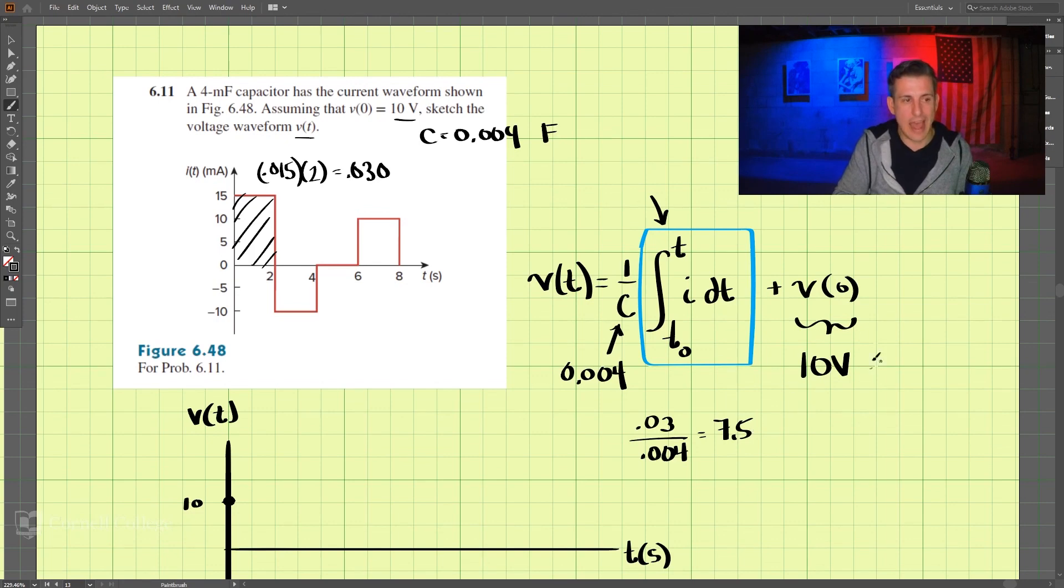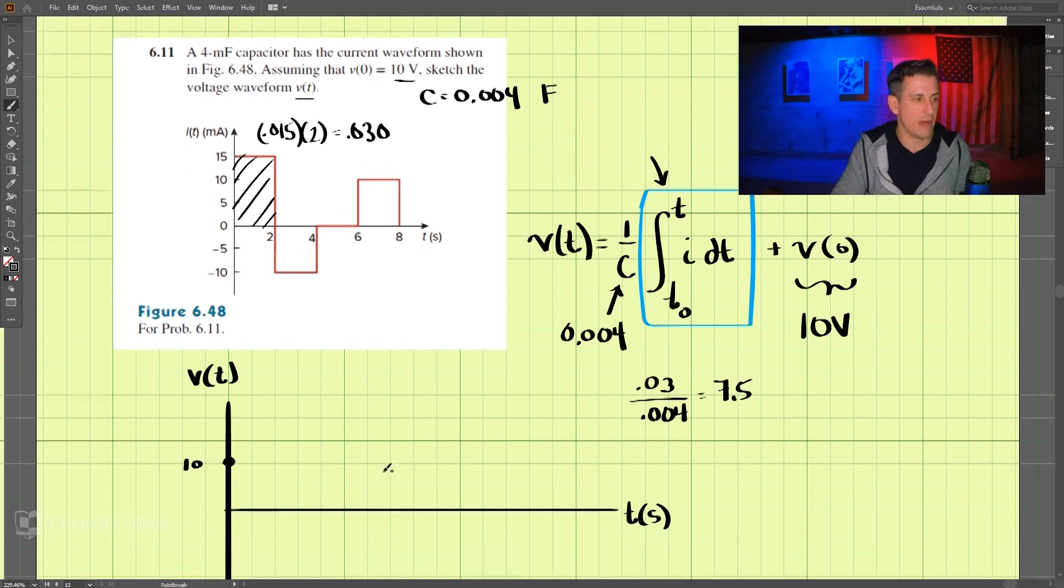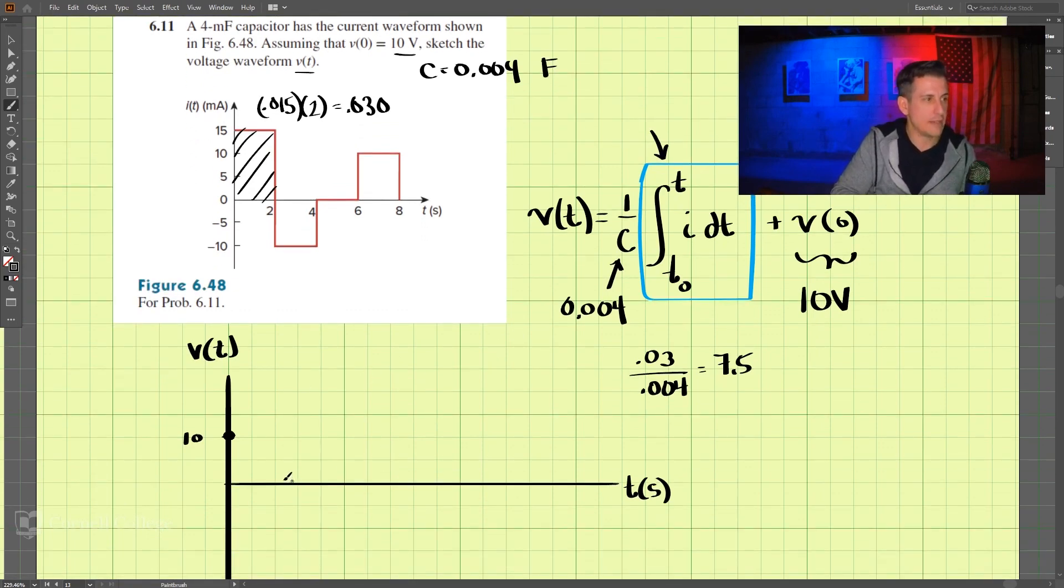And then we add 10 to it, 10 volts, so that's 17.5. So our point at 2 is somewhere up here, and that is 17.5 volts at this point here.